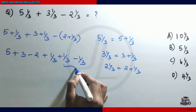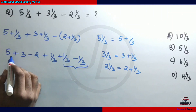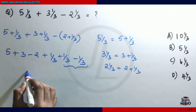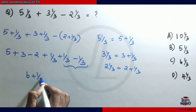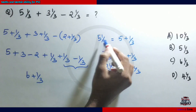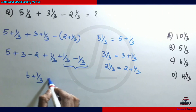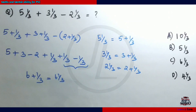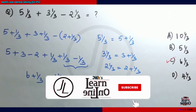Plus 1 by 3, minus 1 by 3. 5 plus 3 is 8, 6 plus 1 by 3, 5 plus 1 by 3 gives 6 plus 1 by 3. The answer is C: 6 and 1 by 3.